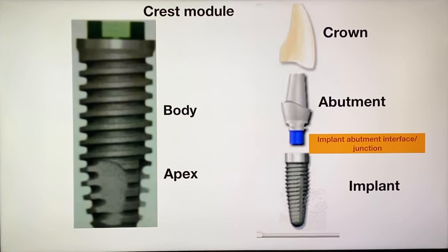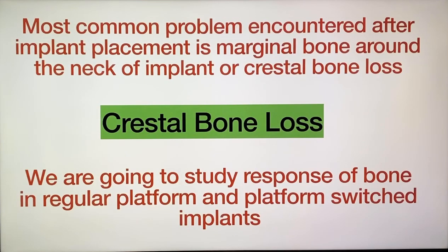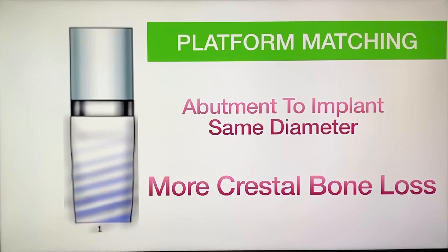A two-piece implant requires two surgeries: first surgery for placement of the implant, and after three months the procedure of prosthesis — that is, placement of the abutment. The most common problem encountered after placement of an implant is marginal bone loss around the neck of the implant, or crestal bone loss. We are going to study the response of bone in regular platforms as well as platform-switched implants. In platform matching, or normal regular implants, the abutment is of the same diameter as the implant. This design was earlier more common but it led to more crestal bone loss.